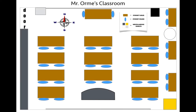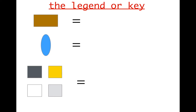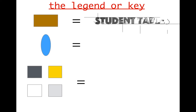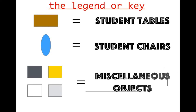Next we'll be taking a closer look at the legend or the key. Upon closer investigation, the legend or key tells us what particular symbols on a map mean. The first symbol here on the left, the brown box, represents student tables. The blue eggs are actually student chairs. And the four boxes indicate the colors of miscellaneous objects found around the room, such as tables.